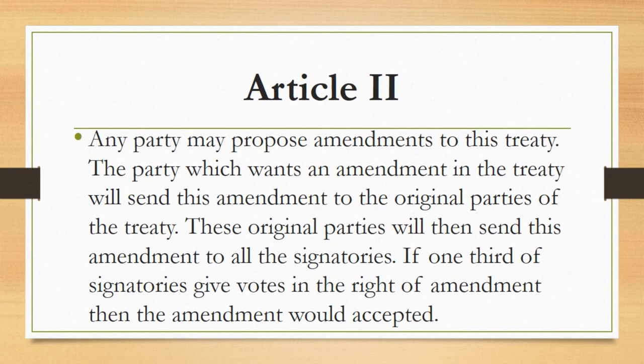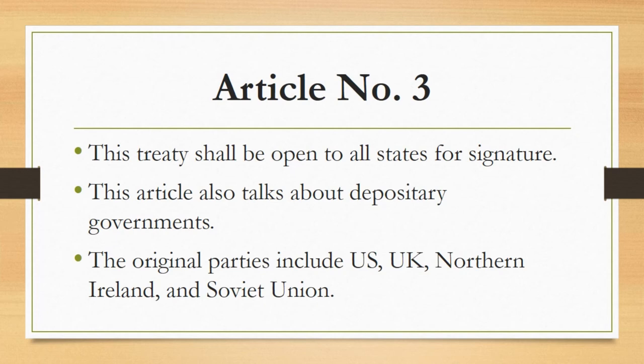Article number two: any party may propose amendments to this treaty. The party which wants an amendment will send it to the original parties, who will then send it to all signatories. If one third of signatories vote in favor of the amendment, it would be accepted.